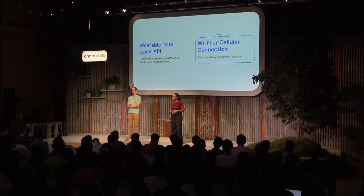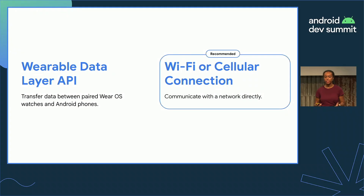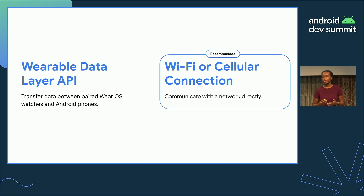An important point to note with both options is that currently, due to HealthConnect's restrictions on background reads, your phone app will only be able to read data back from HealthConnect — and therefore pass it on to the watch app — after the user has interacted with your phone app in the foreground. We're always looking for ways to improve the developer experience, and these restrictions may change in the future, so stay tuned for updates in that space.